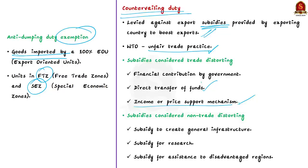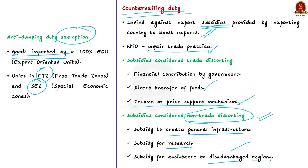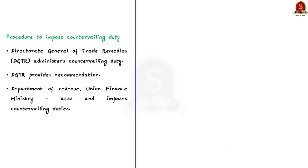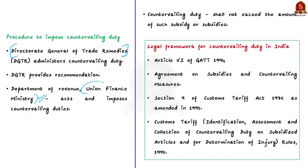Subsidies provided to create general infrastructure, subsidies for research activities, and subsidies for assistance to disadvantaged regions within the exporting country's territory will not attract countervailing duty. In India, the Directorate General of Trade Remedies administers anti-subsidy countervailing measures as well. As with anti-dumping duty, the DGTR recommends the duty, but it is finally imposed by the Finance Ministry. The countervailing duty imposed should not exceed the amount of subsidy provided by the exporting country.